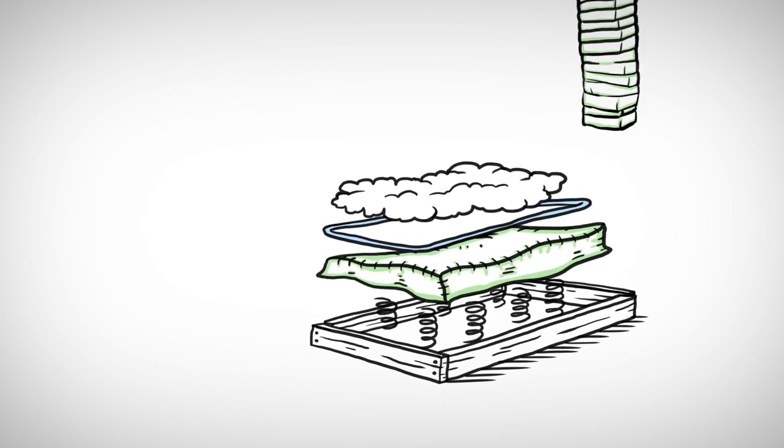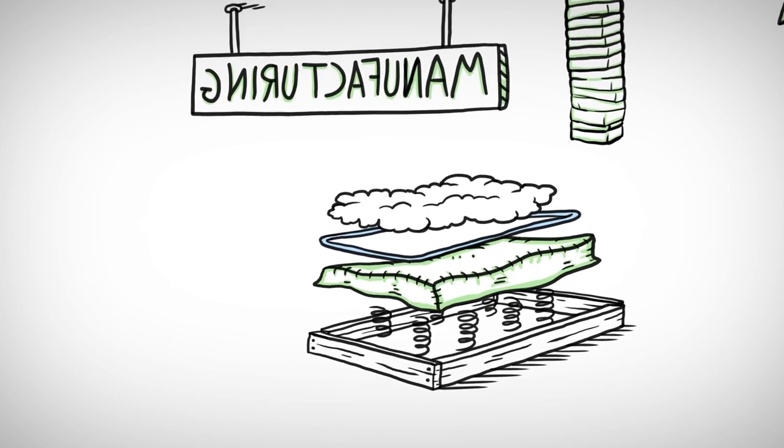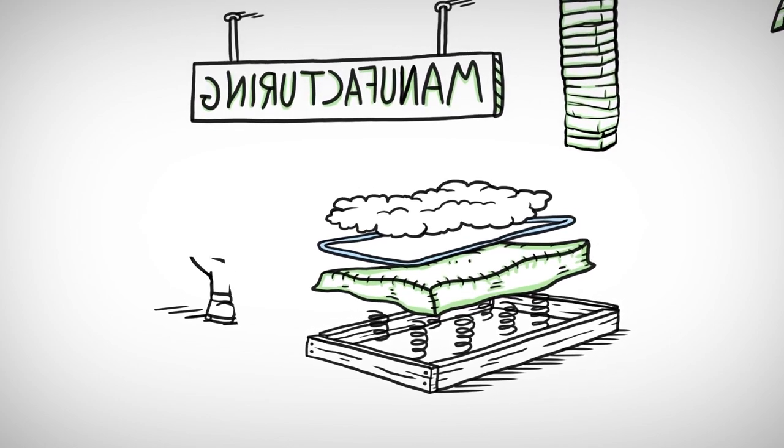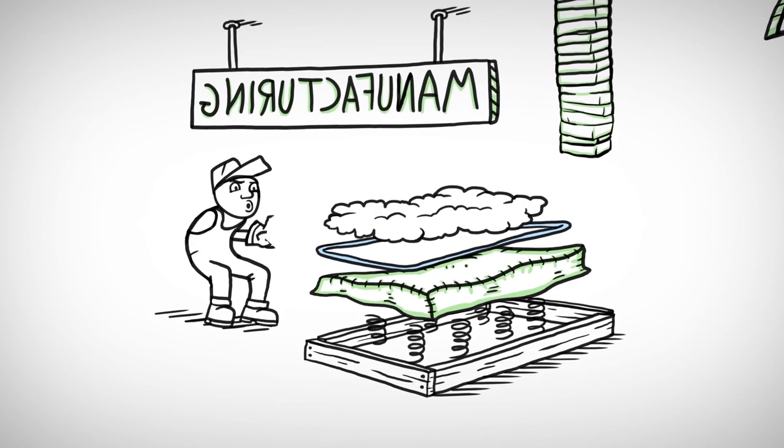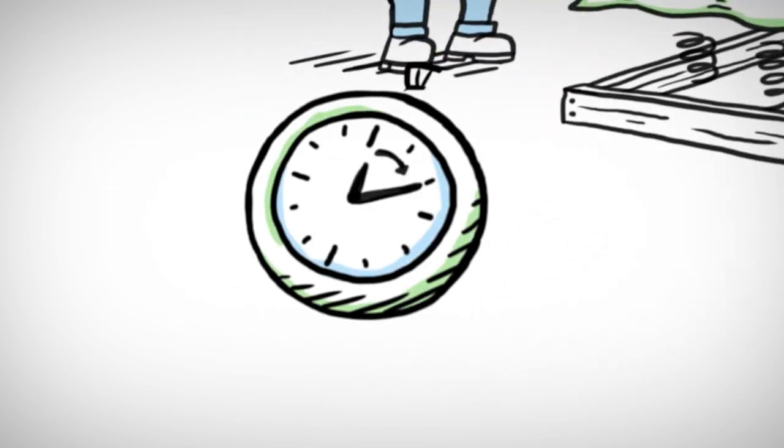The process to recycle a mattress is very similar to manufacturing, only in reverse. You take everything apart in layers. Often, this process is done by hand. A good mattress stripper can separate the materials in about 10 minutes.